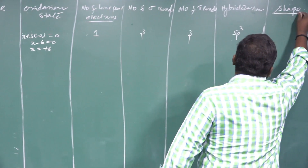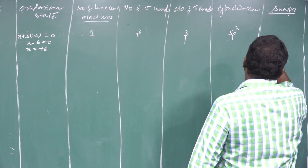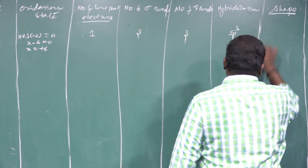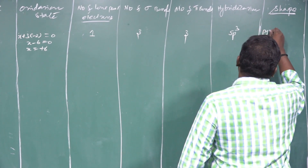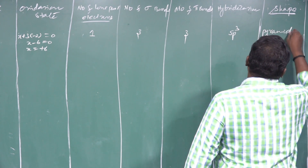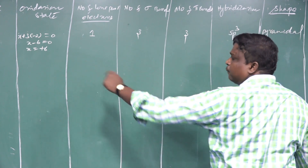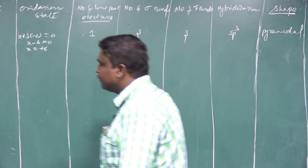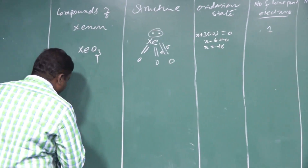Shape of XeO3 = pyramidal (trigonal pyramidal).